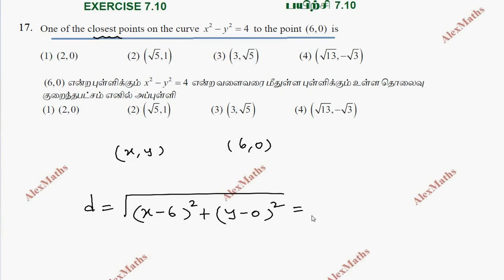The first term is (x minus 6) whole square, this is y square. The curve equation is x square minus y square equals 4, so y square equals x square minus 4.